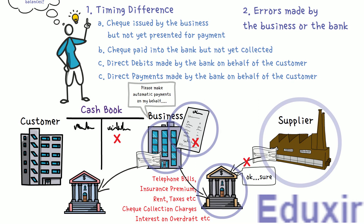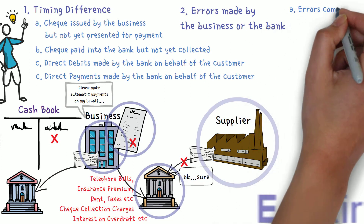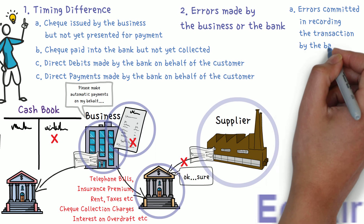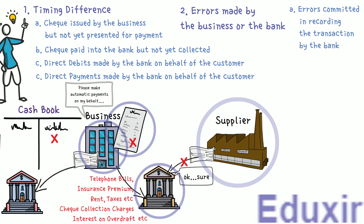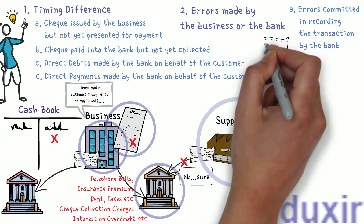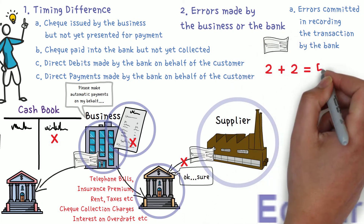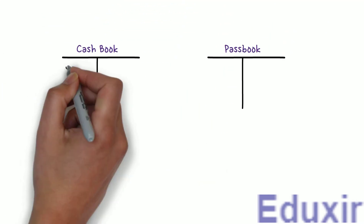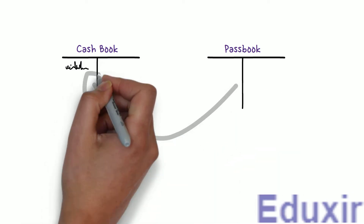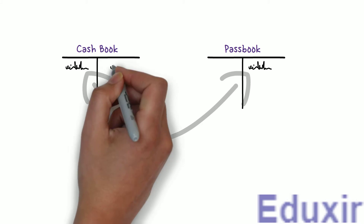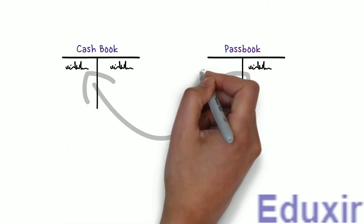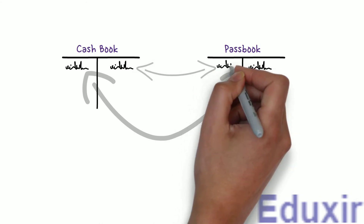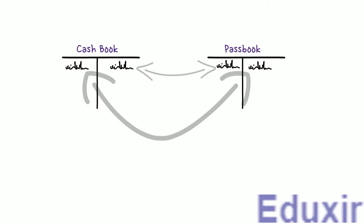Coming back to errors made by the business or the bank: errors committed in recording transactions by the bank — due to omission or wrong recording of checks issued, checks deposited, wrong totalling, etc. — will cause a difference between cashbook and passbook balances. Also, when there is any debit entry in the business cashbook, the corresponding entry in the bank passbook would be on the credit side, and vice versa. We have to keep this in mind as we analyze each detail in the problem.